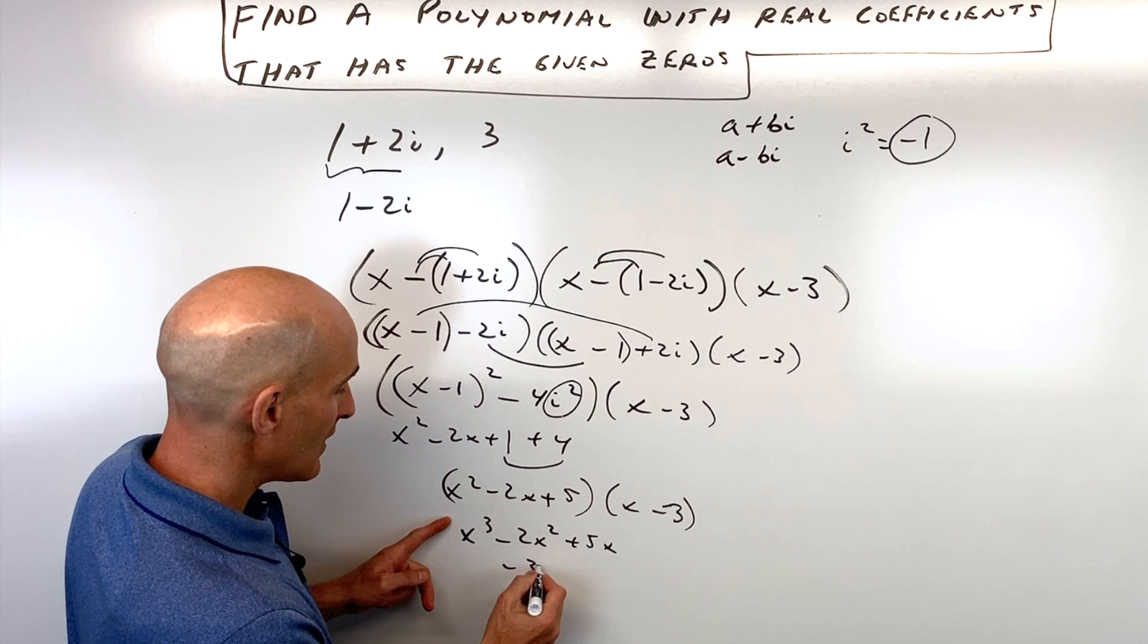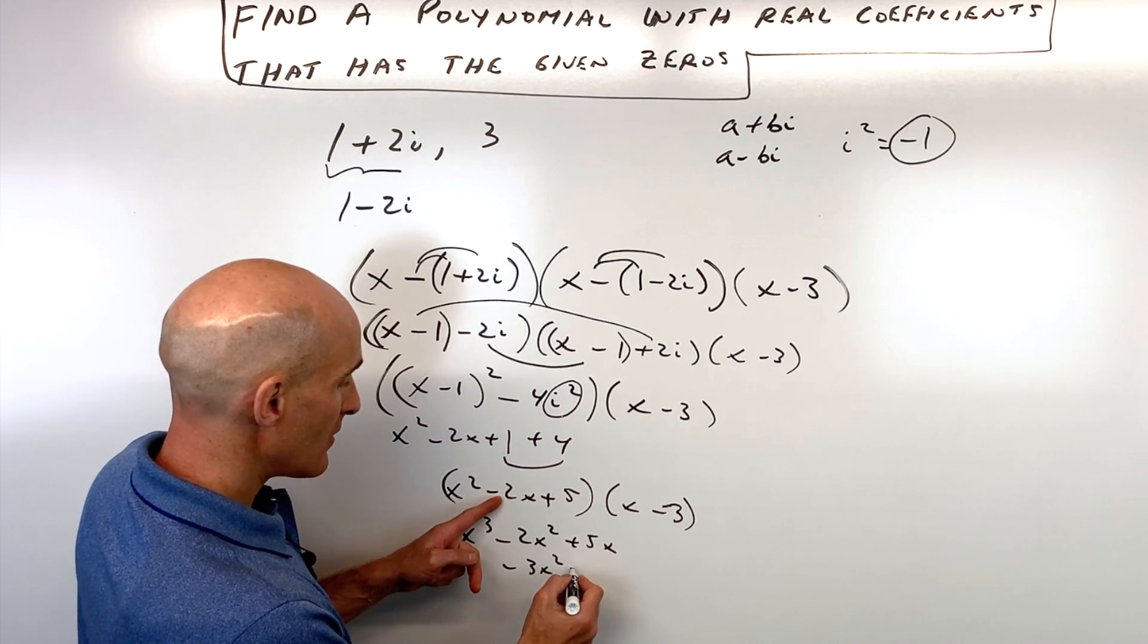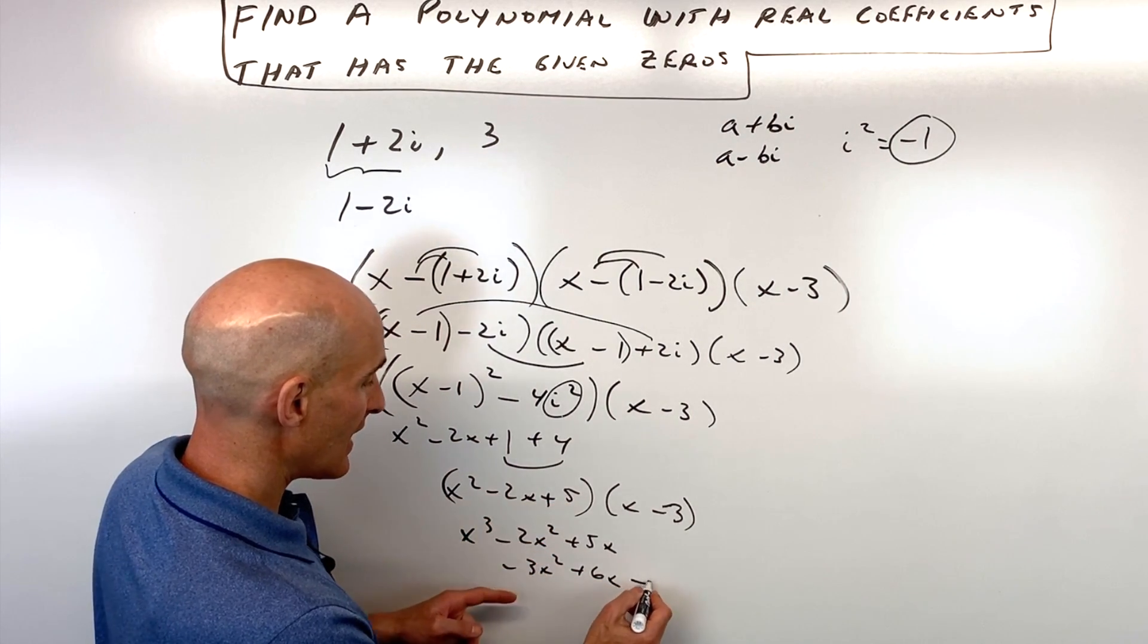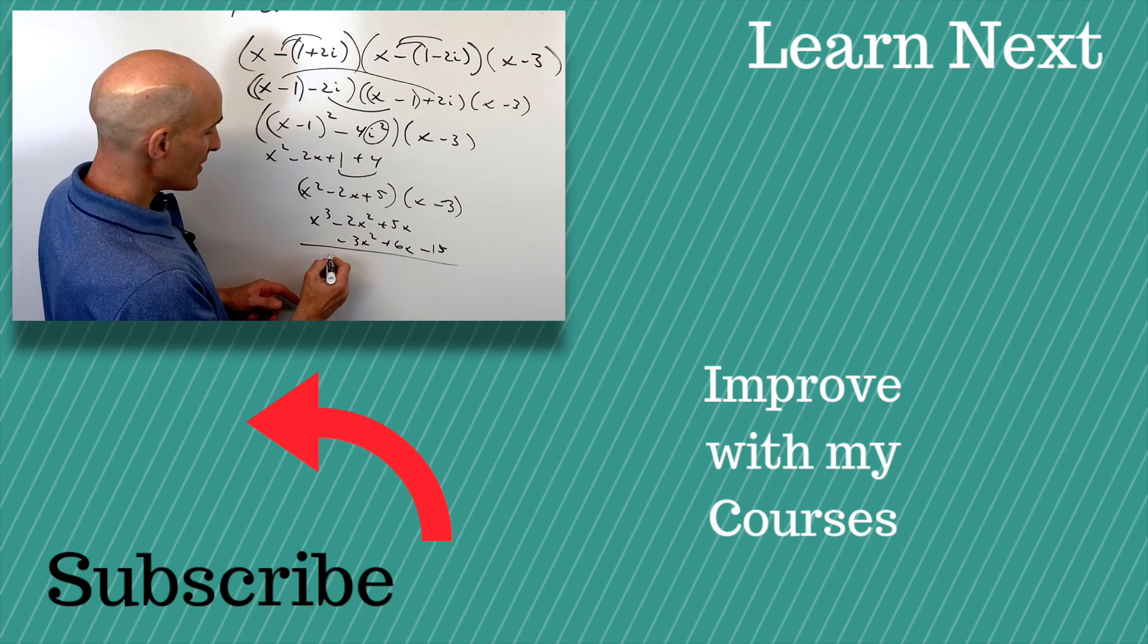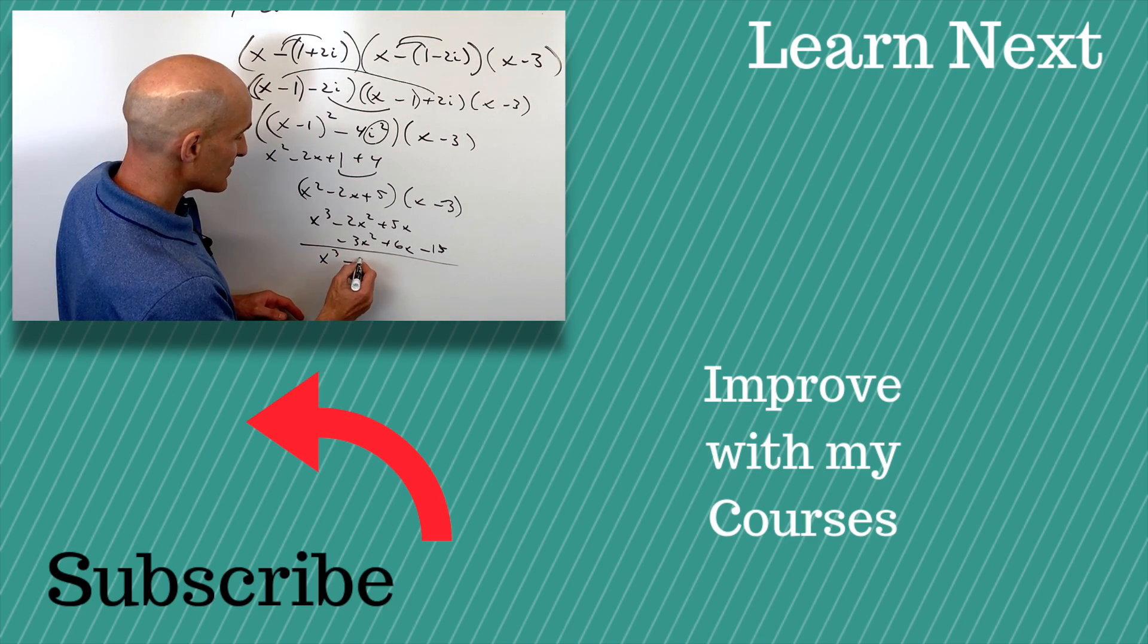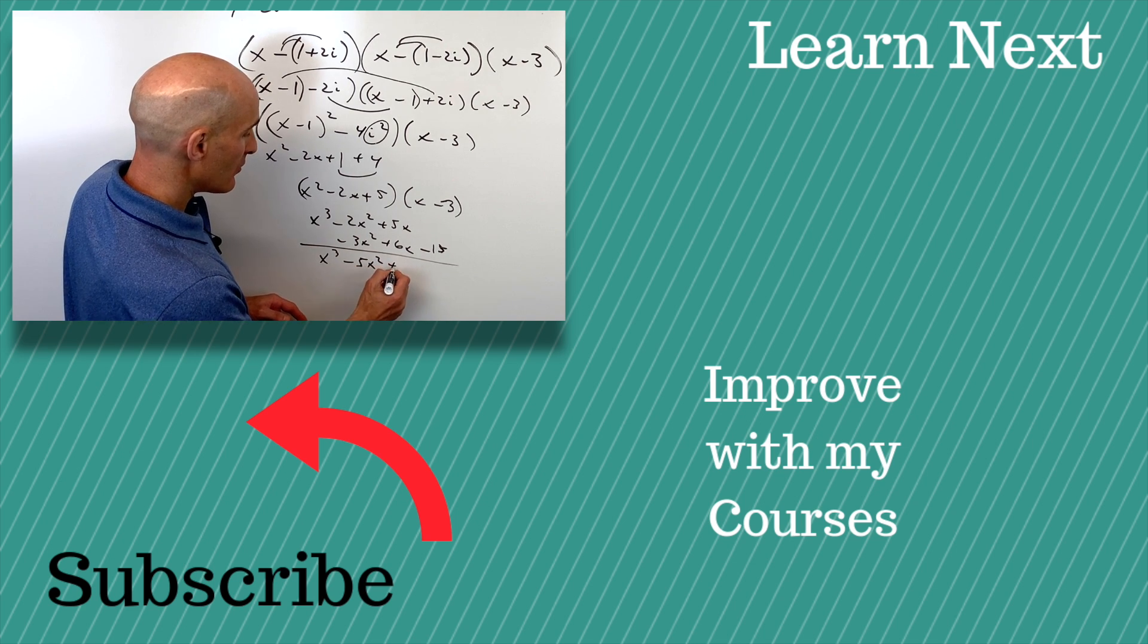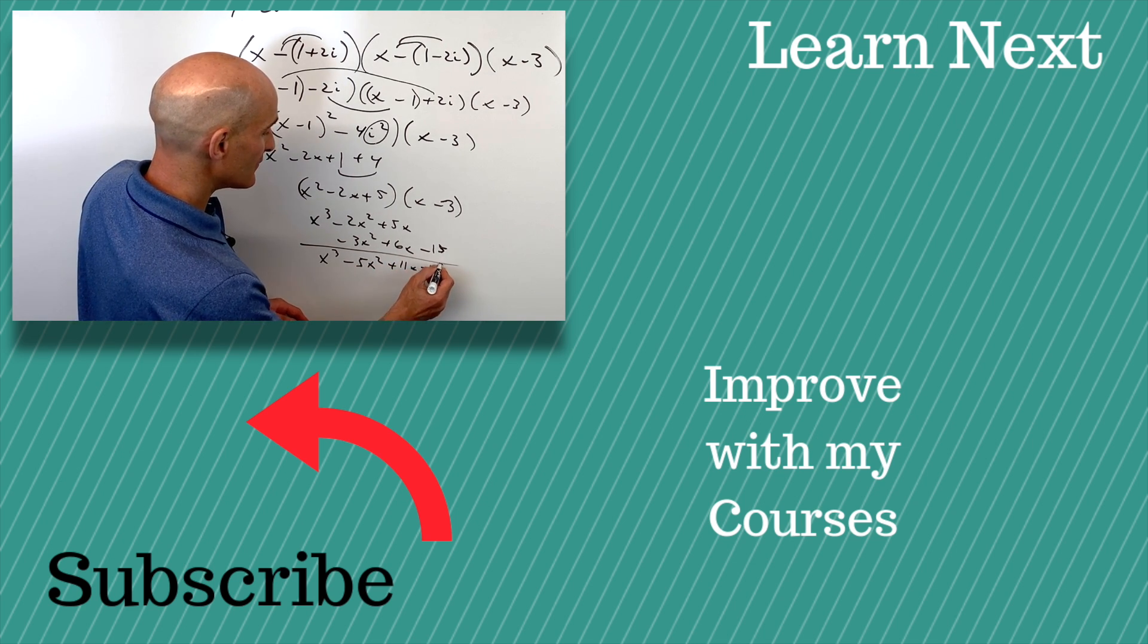And if we distribute the negative three, we get negative three x squared, positive six x and negative 15. So now if we add those together, what do we get? We get x cubed minus five x squared plus 11 x minus 15.